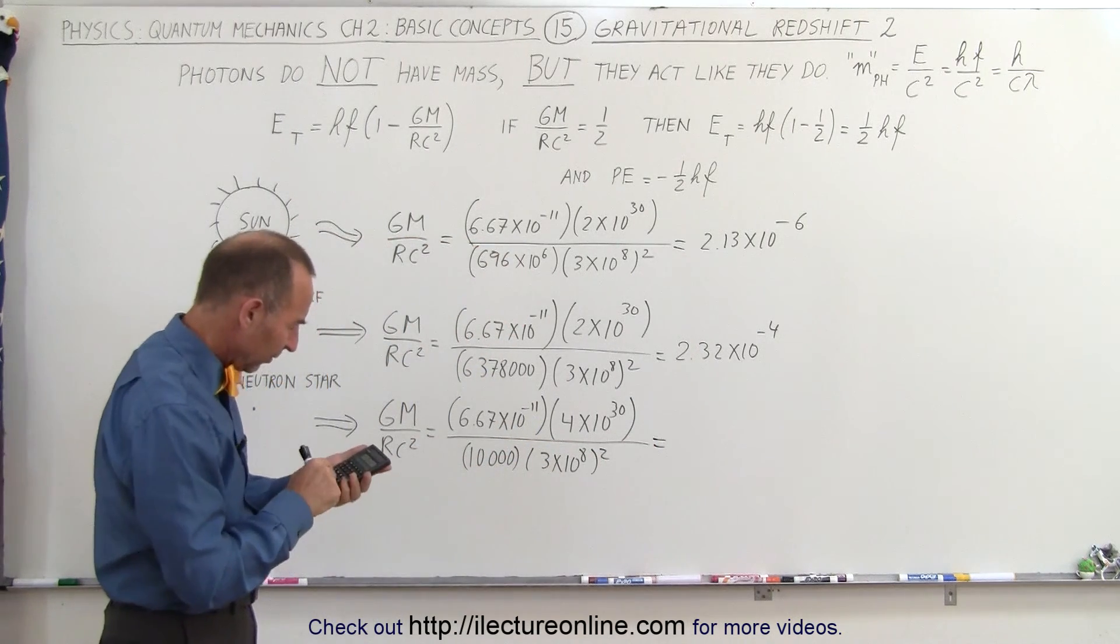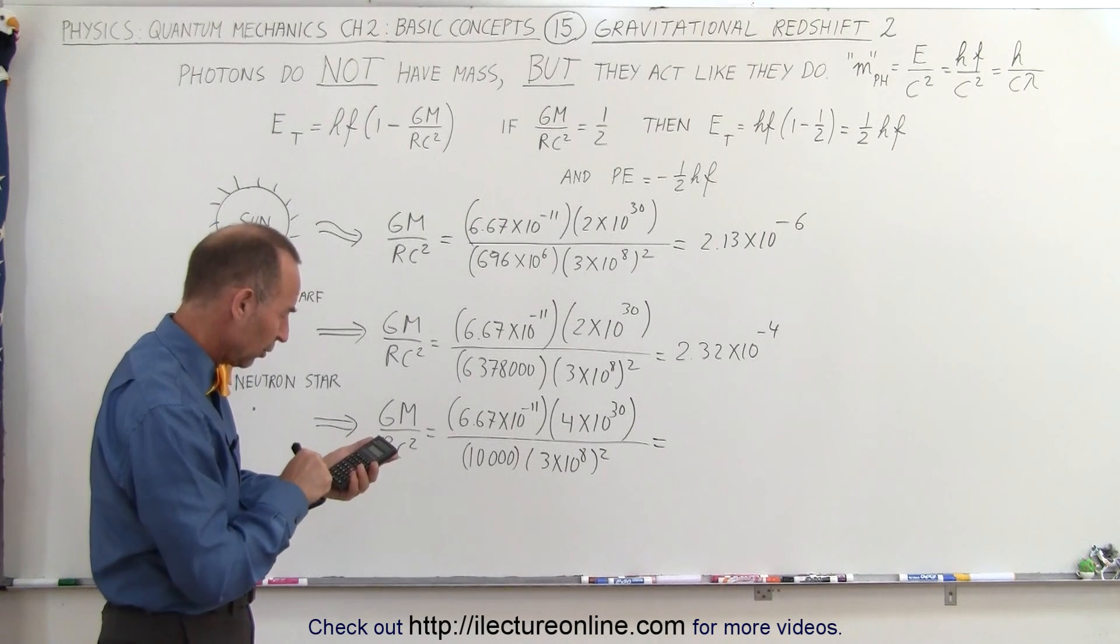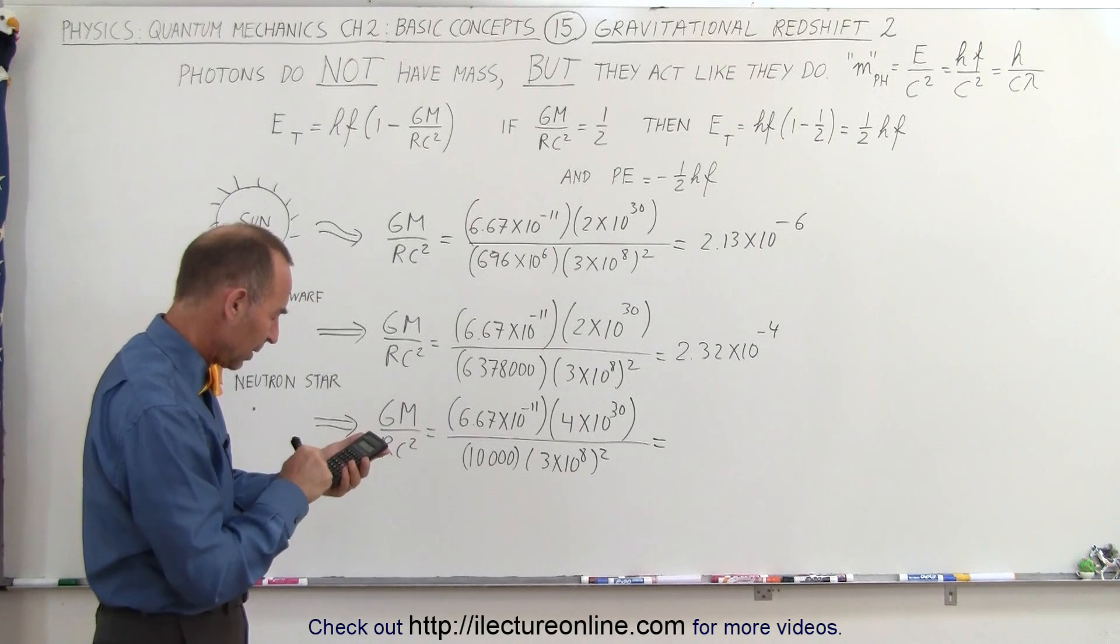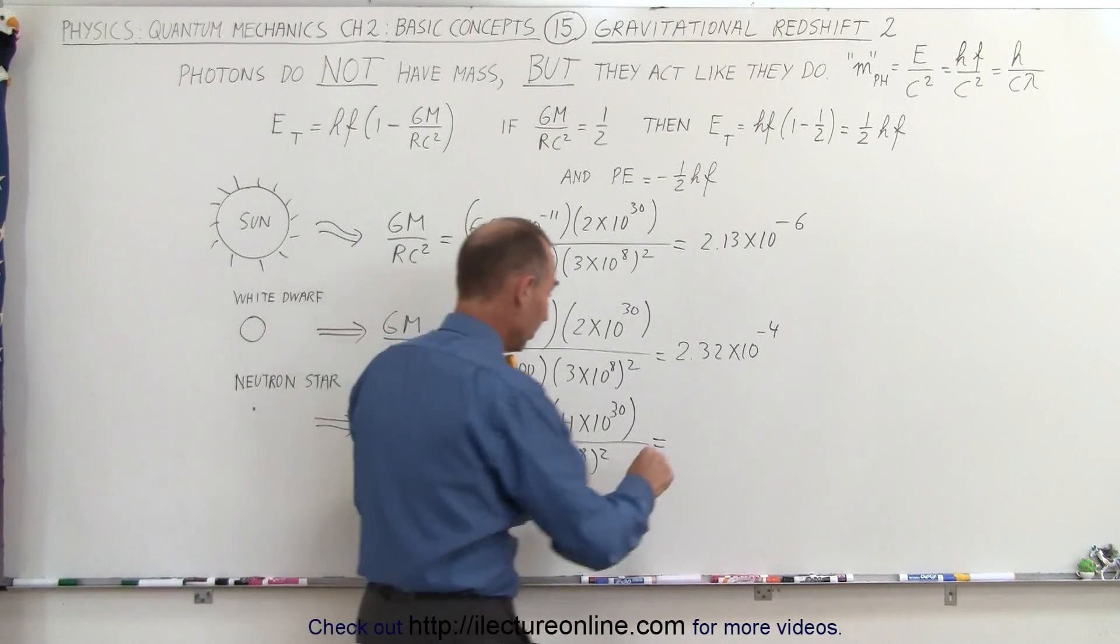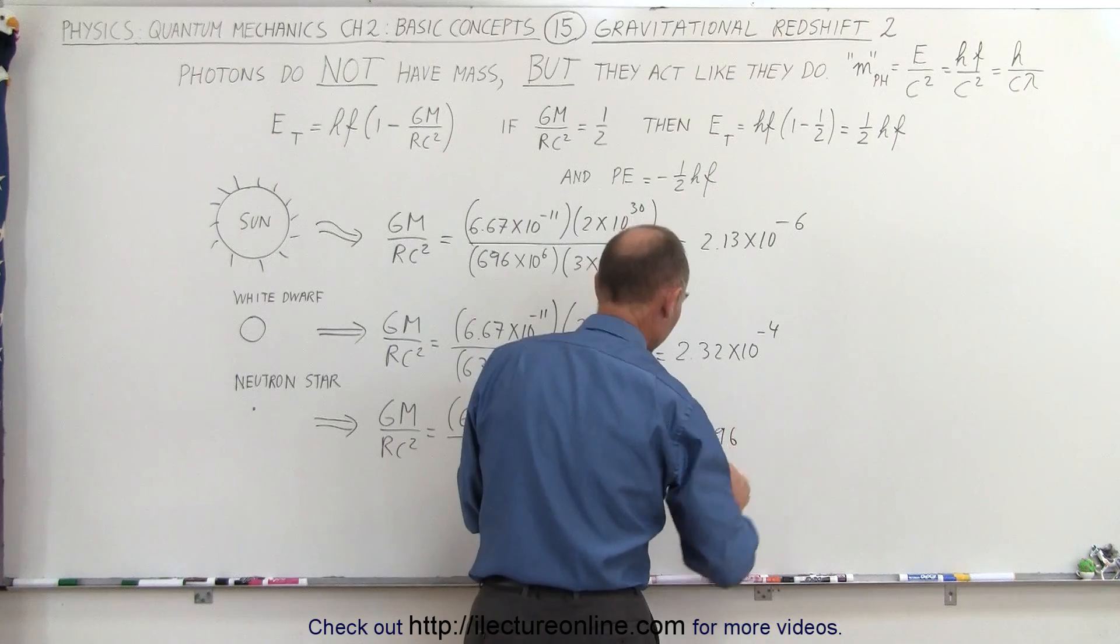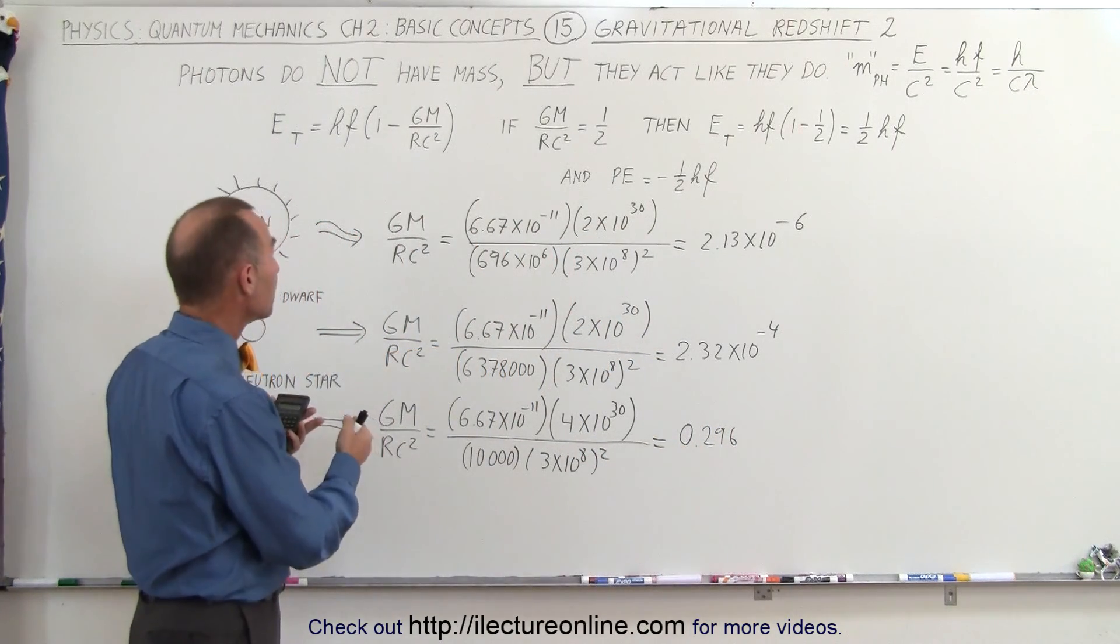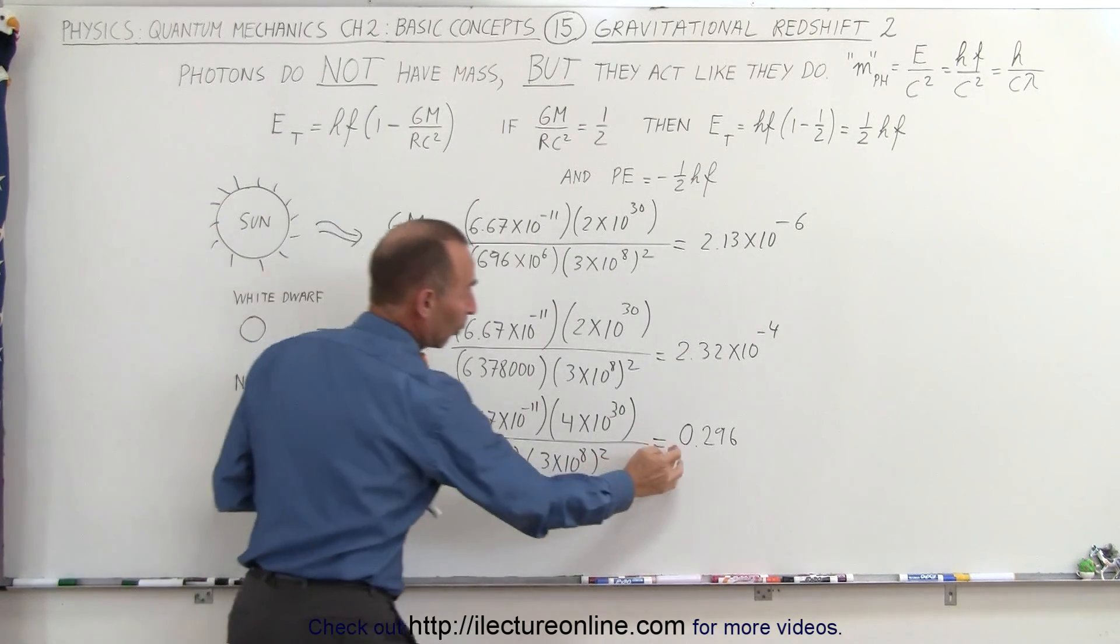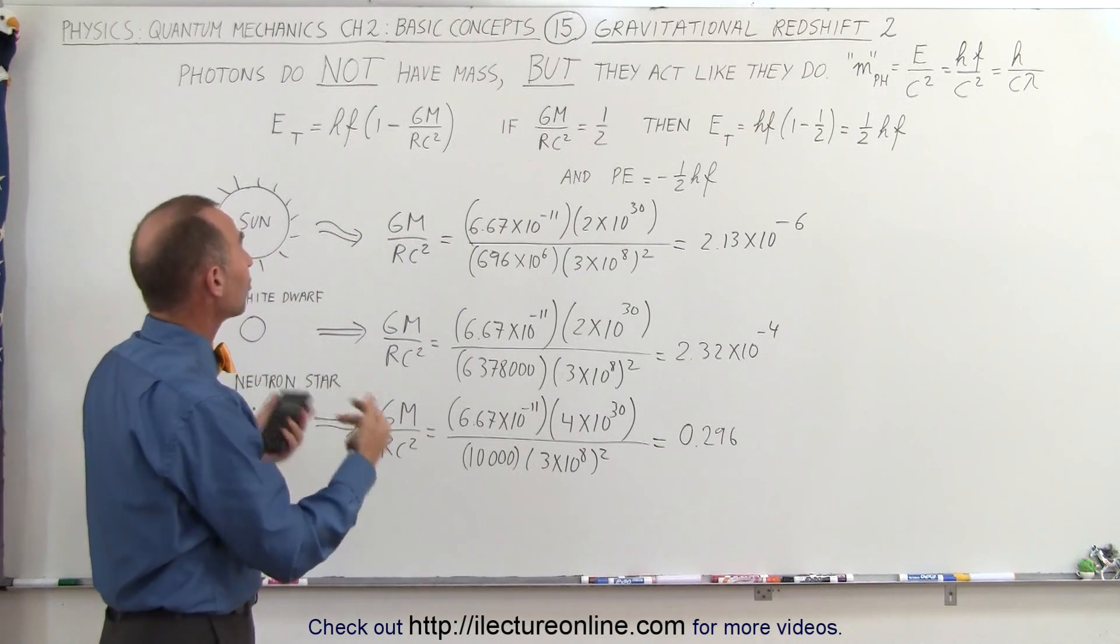6.67 E minus 11 times 4 E 30 divided by 10,000 divided by 3 E 8 squared equals 0.296. That's almost 3 tenths. In other words, if we take the total energy, which would be 1 minus this, notice we only have 0.7 of HF left.